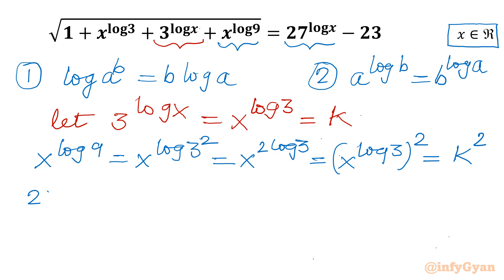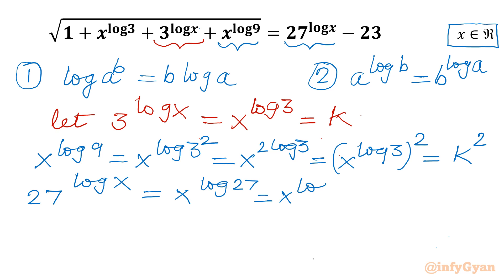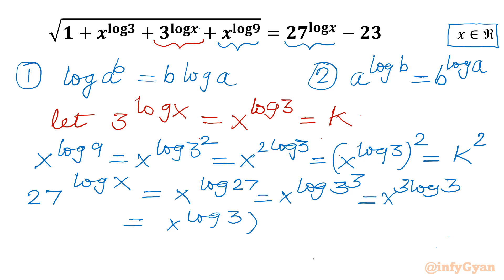Now let's calculate 27^(log x). Using property 2, this equals x^(log 27). Since 27 equals 3³, using property 1 we get x^(3·log 3). By the exponent property a^(b·c) equals (a^b)^c, this becomes (x^(log 3))³, which equals k³.